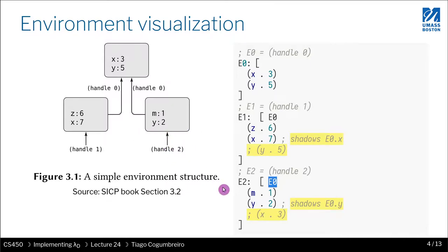So what else? In E0 you can see X to be 3 and Y to be 5, right? And then in E1, E1 has access to Z to be 6 and X is bound to 7.